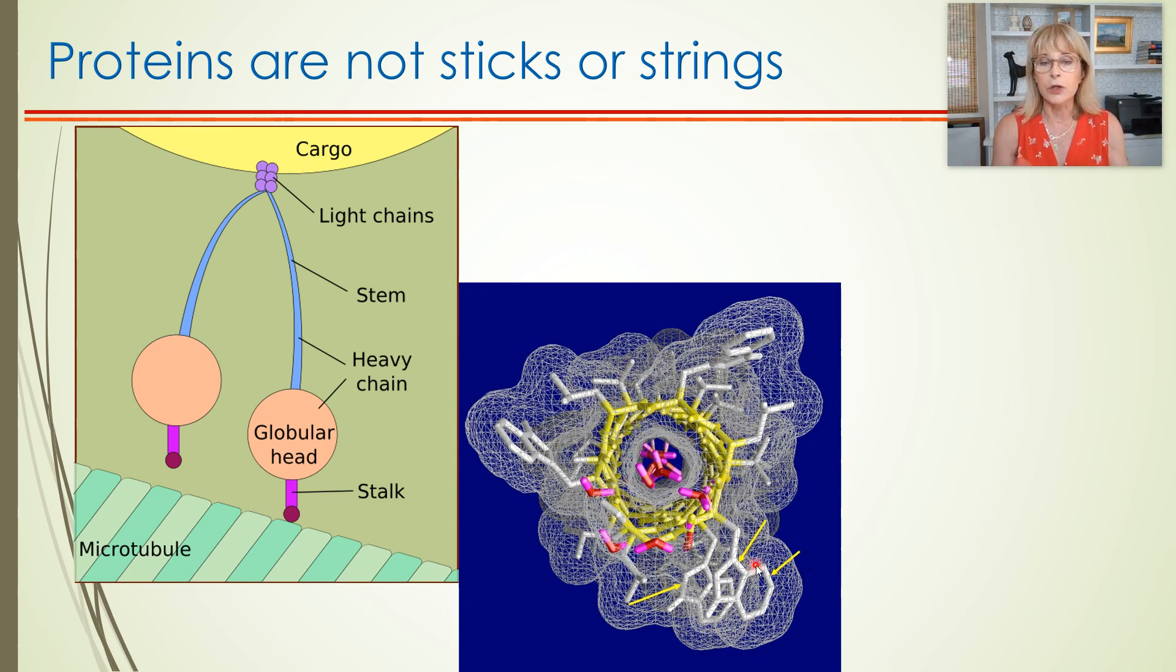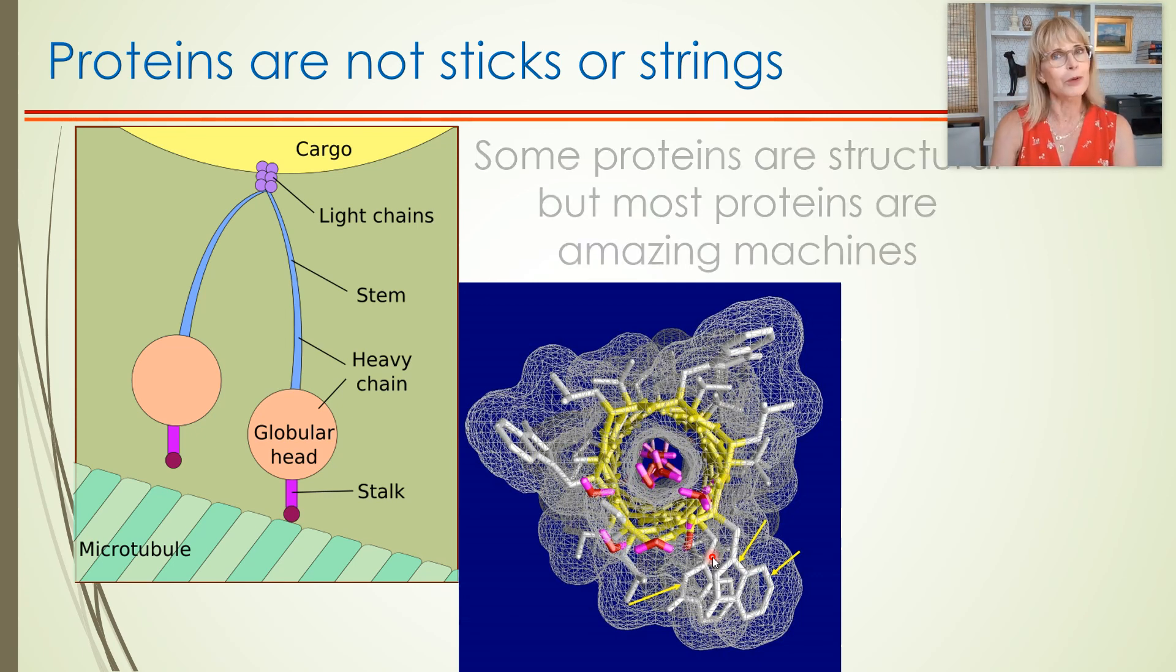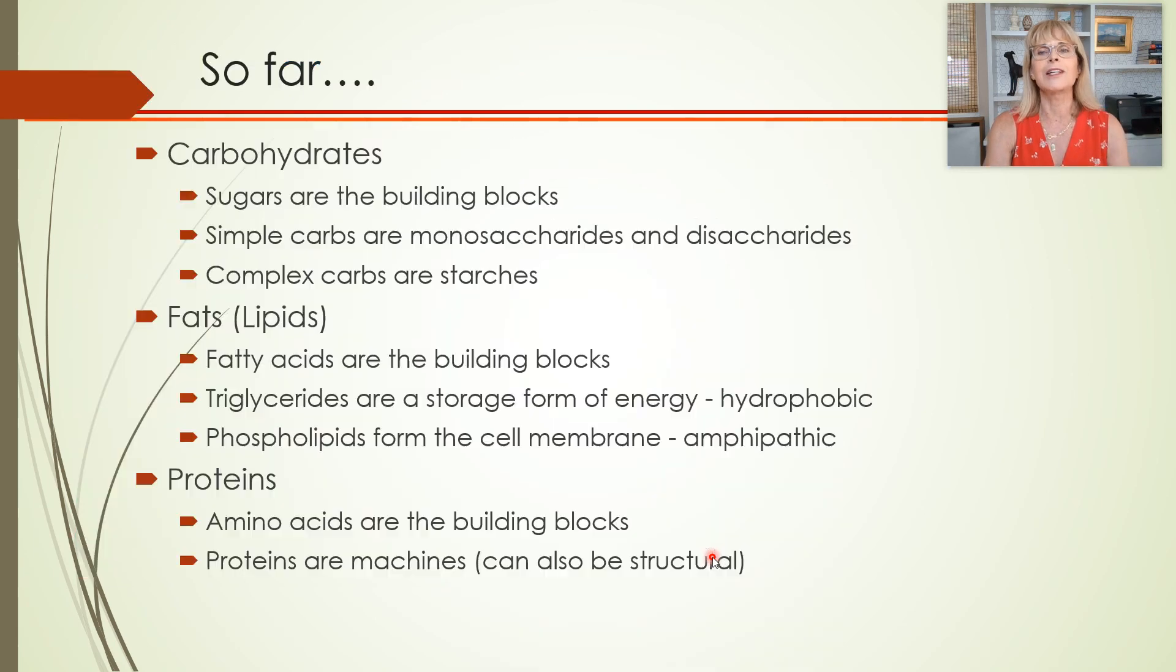Here is one that is a carrier protein. A molecule like glucose would bind right in this area here. And as soon as that glucose bound, then this whole molecule would change shape. And in changing shape, it will allow the glucose to go into the cell when normally glucose cannot get across the phospholipid bilayer.